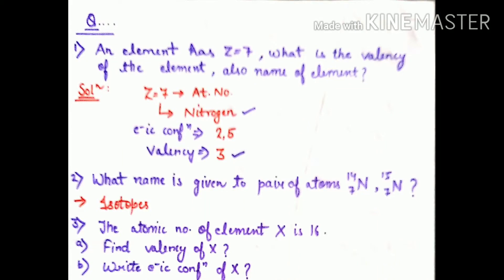Hi everybody, welcome back to my channel Chemistry Chat Chat. This is part number 11. In this part we will do some questions. Question number 1: An element has Z equals 7, what is the valency of the element and also name the element?